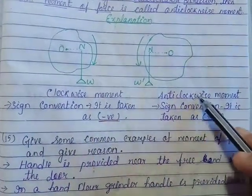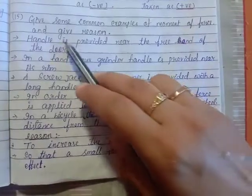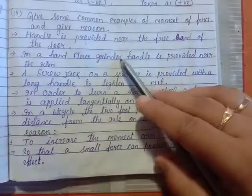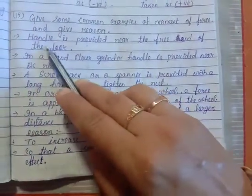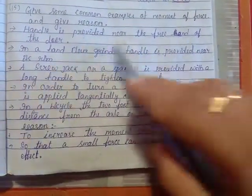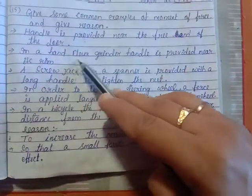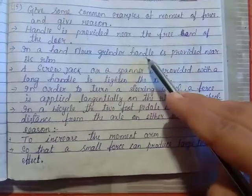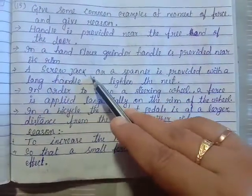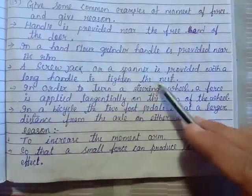Let's look at common examples of moment of force in daily life. The handle of a door is always provided near the free end, not in the middle or near the hinge. Similarly, in a hand floor grinder the handle is near its rim, and in a screw jack or spanner a long handle is used to tighten the nut.